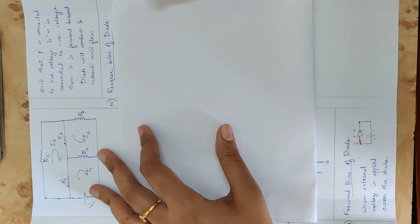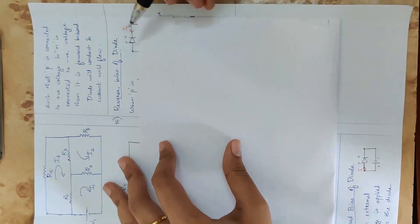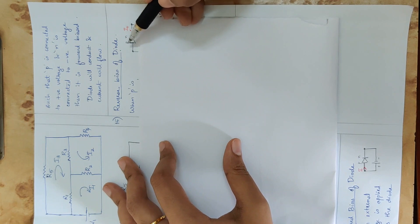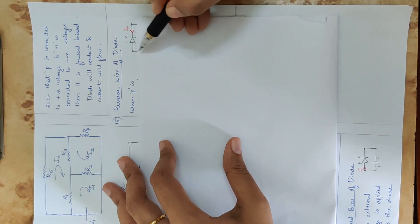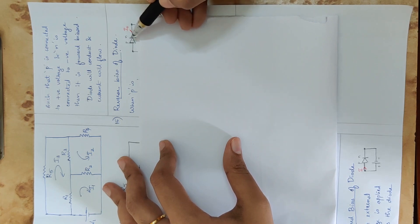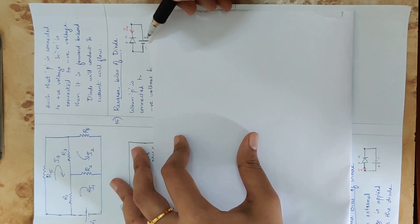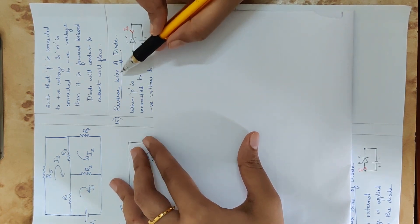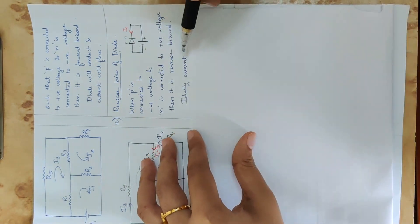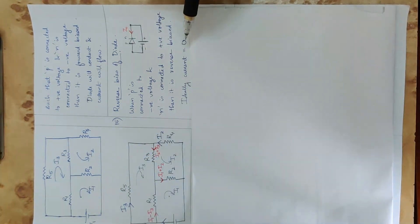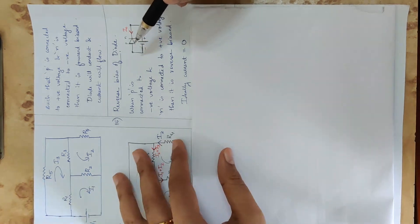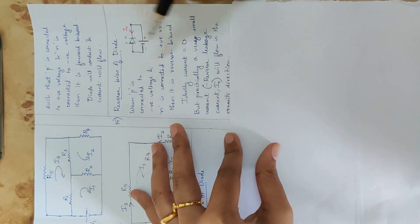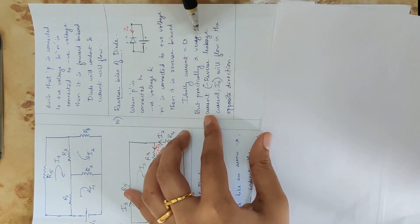In reverse bias, P is connected to negative voltage and N is connected to positive voltage. This is reverse biased. When reverse biased, the current is equal to zero ideally — the diode does not conduct, acting as an open circuit.